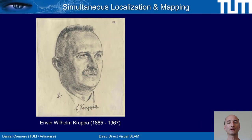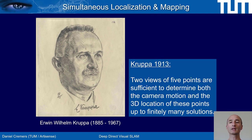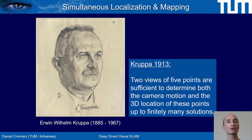Visual SLAM, or often called structure from motion, has a long-standing history. One of the pioneers is Erwin Krupa, and more than a hundred years ago, he proved that if you observe five corresponding point pairs in two images, this allows us to recover the relative motion of the camera and the 3D location of these points.